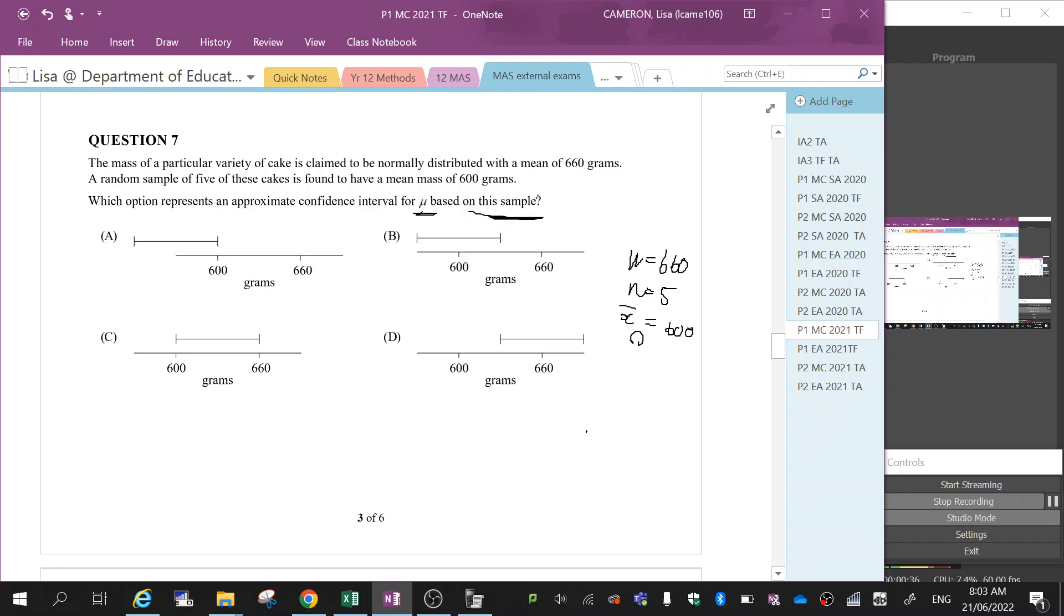It's based on the sample, meaning when calculating the confidence interval, we use this formula: CI equals the sample mean plus or minus z multiplied by the deviation over the square root of n.